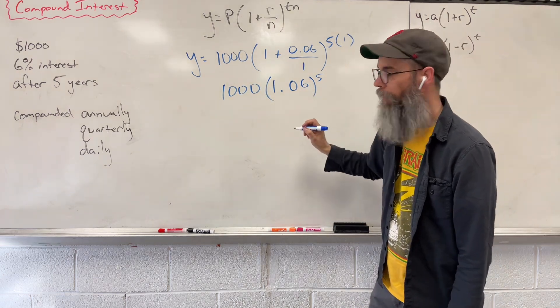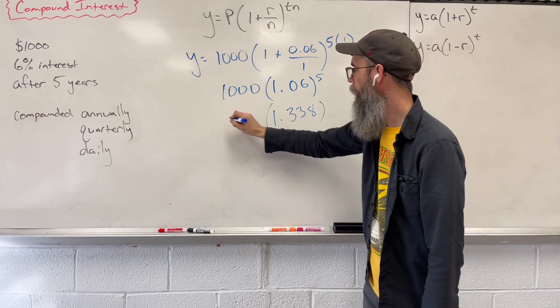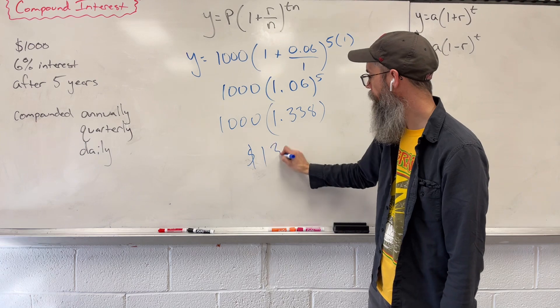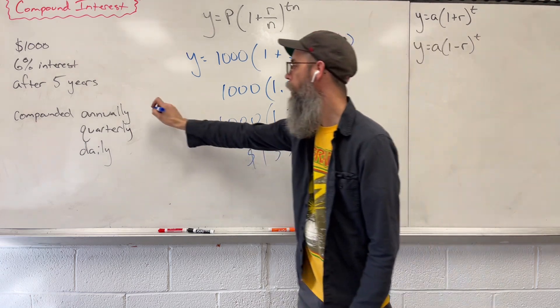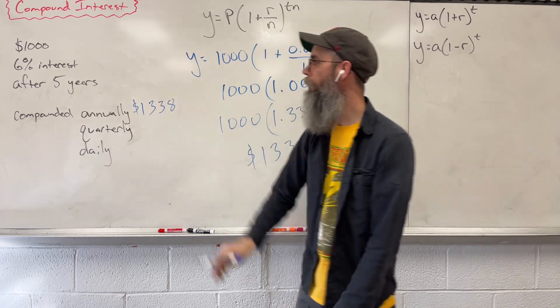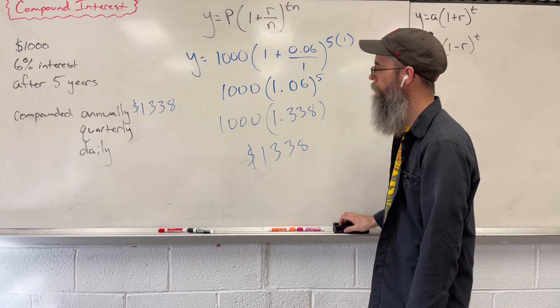When we raise that, we are left with 1.338. Take that, multiply it by 1,000, and we have $1,338. All right, not bad for doing zero work, having an extra $1,000 laying around five years later, an extra $300 and some dollars.